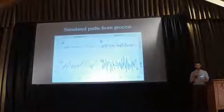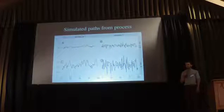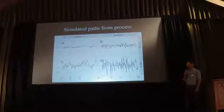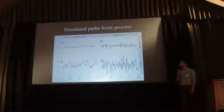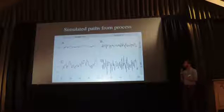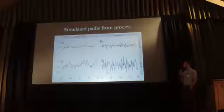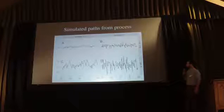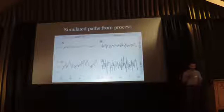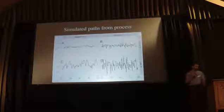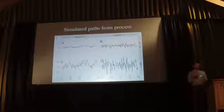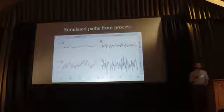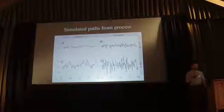To get a sense of what the different parameters mean, we can look at some sample paths. We vary the rate parameter lambda left to right — things on the right are faster — and then we vary the sigma parameter top to bottom, which parametrizes how far the deviations are away from the mean abundance.